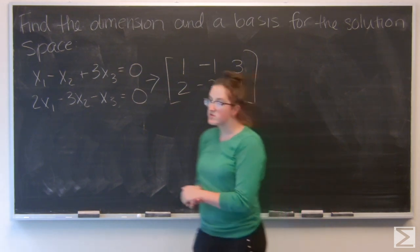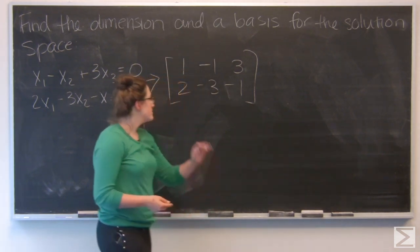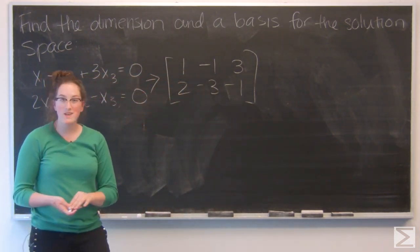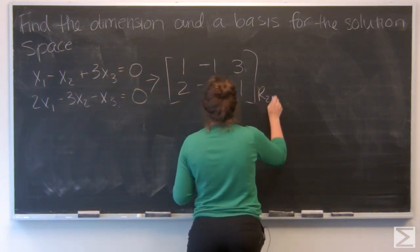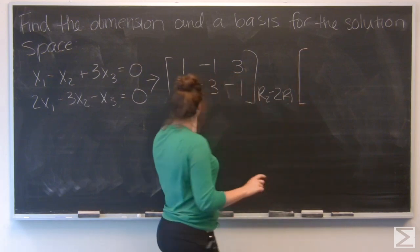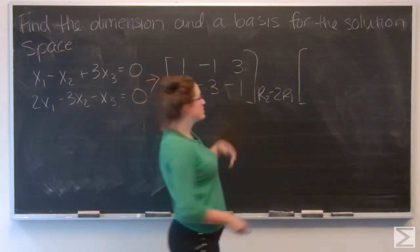I want to put this in reduced row echelon form. To start, I'm going to subtract two times row one from row two. I'm just going to carry row one through. I'm not going to make any changes.